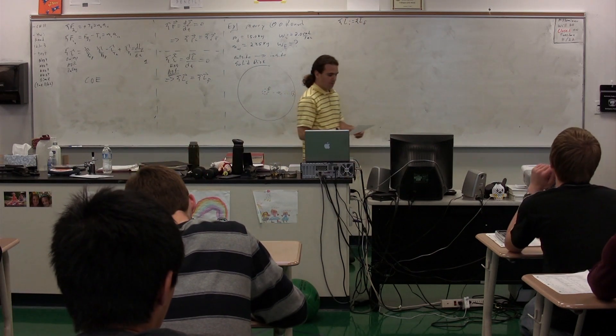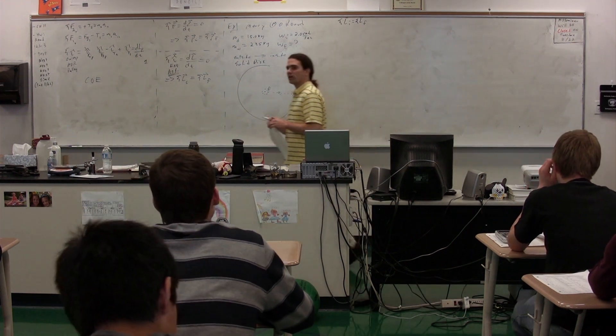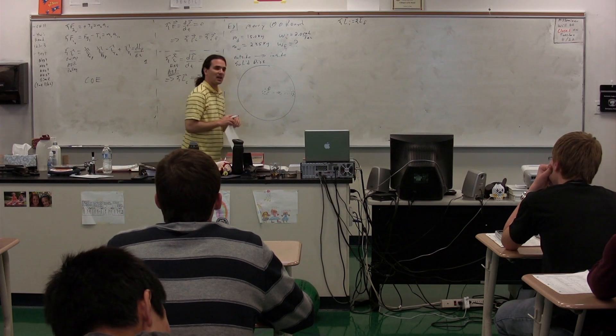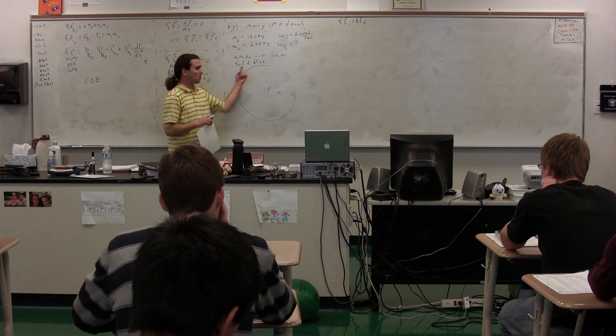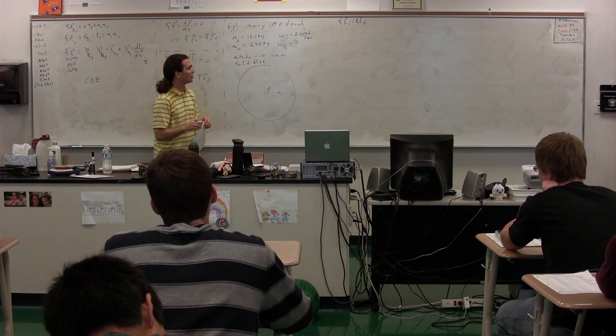So we have my daughter and the merry-go-round. Now, we're going to treat my daughter as a point particle, and the merry-go-round as an object with shape. She is much smaller than the merry-go-round—it's not perfect, she's not quite a point particle, but it's a good approximation.